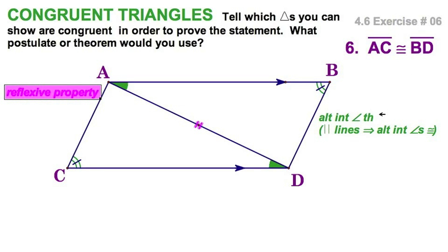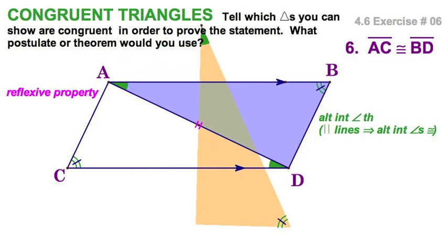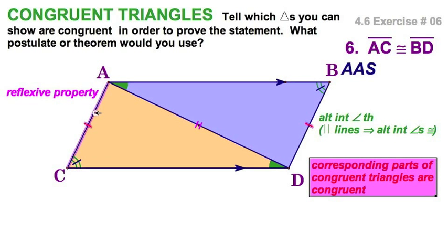So if they're congruent, and our good friend the reflexive property shows up — look at these angles. I've got angle, angle, side for this triangle, and over here angle, angle, side. I can see that they are rotations of each other. Therefore they're congruent by angle-angle-side. And what's the punchline? Then all their corresponding parts — in this case, AC congruent to BD — are congruent.